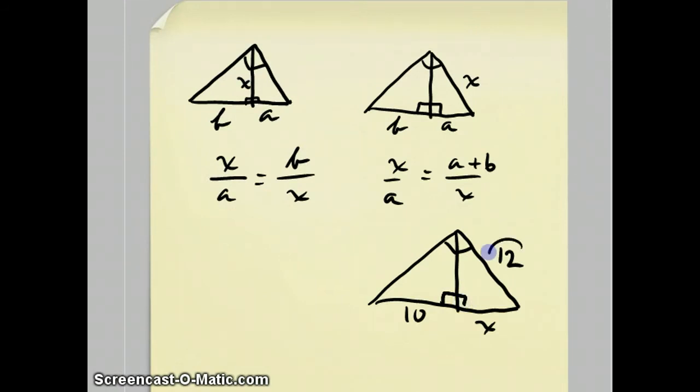So the 12 will be the mean proportional, meaning it goes on diagonal from itself in this proportion, between the piece underneath it which is the x and the entire hypotenuse which is 10 plus x.